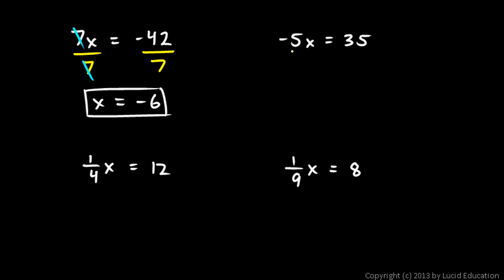Over here, similar thing. This is negative 5 times x. So in order to get x by itself, I need to get rid of the negative 5. And this negative 5 and the x are multiplied, so I get rid of the negative 5 by dividing. And if I divide by negative 5 on the left, I divide by negative 5 on the right. On the left, the negative 5 and the negative 5 cancel out, which was the point. That was the goal to get those to cancel out. I'm left with an x on the left side. And on the right side of the equal sign, I have 35 divided by negative 5, which is negative 7.